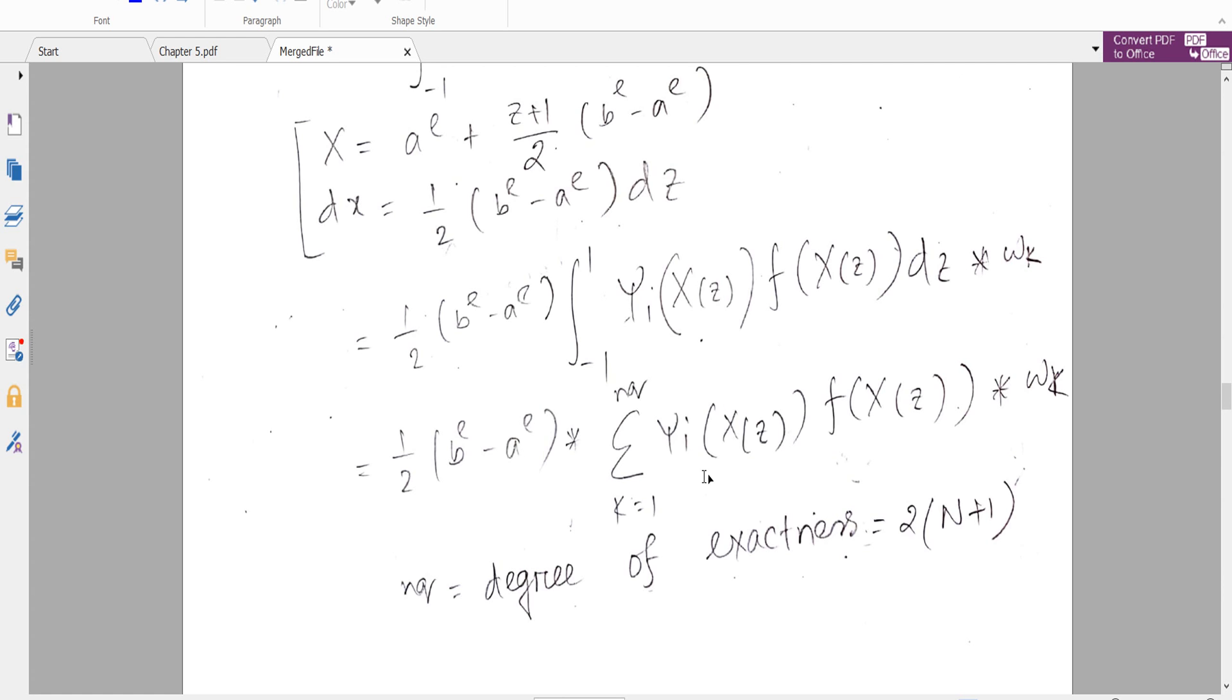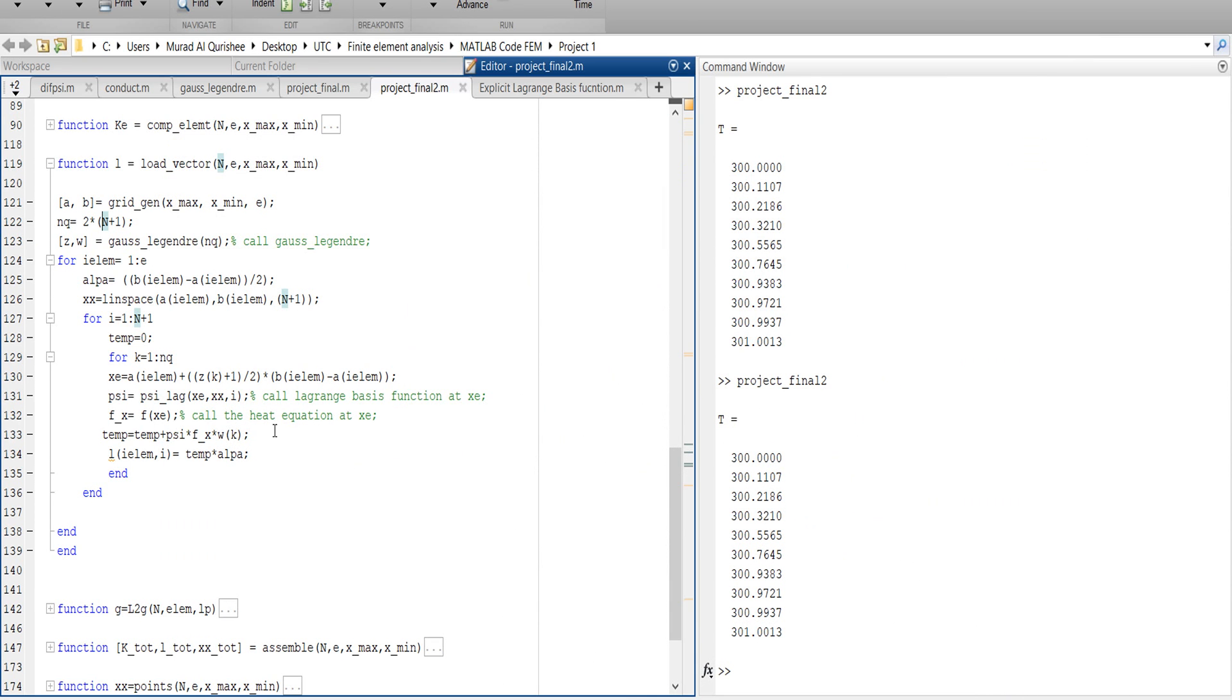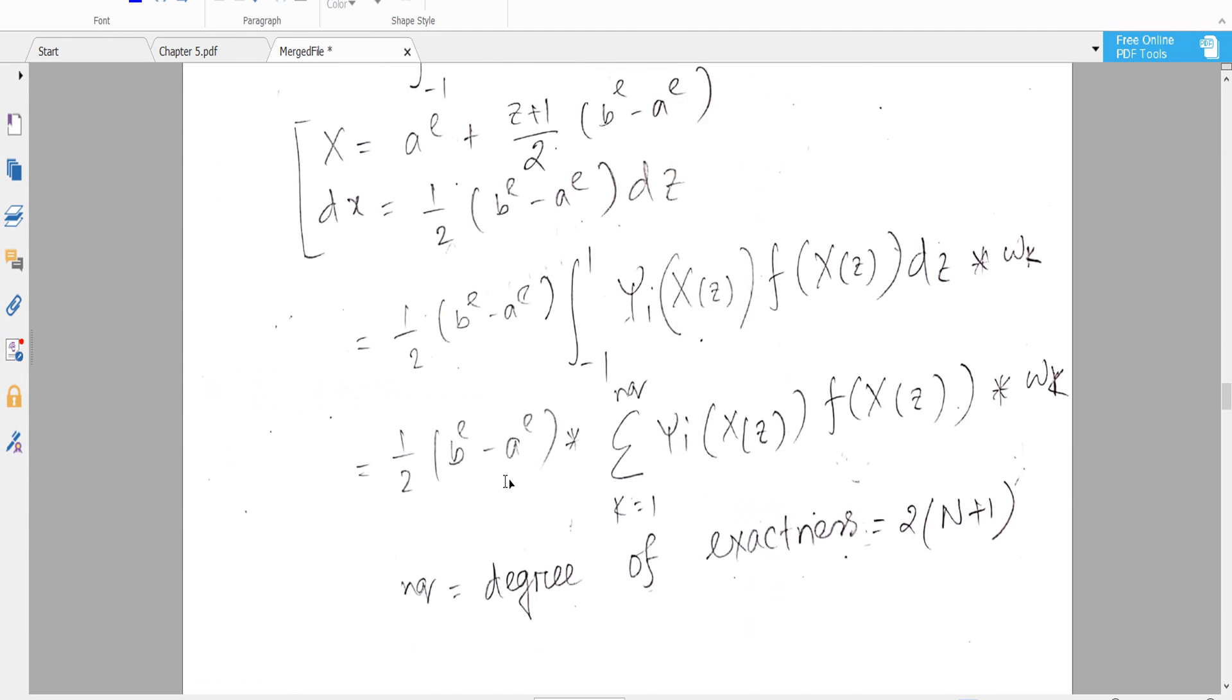And this one is inserted in the K loop. So here the K loop is 1 to Q number of quadrature. Inside the K loop there is an I loop, I equals 1 to N plus 1.